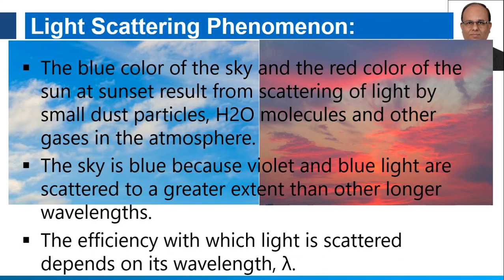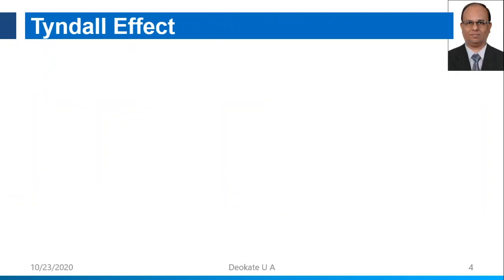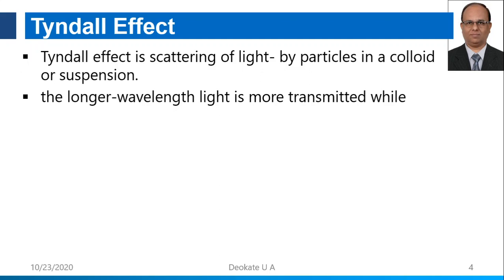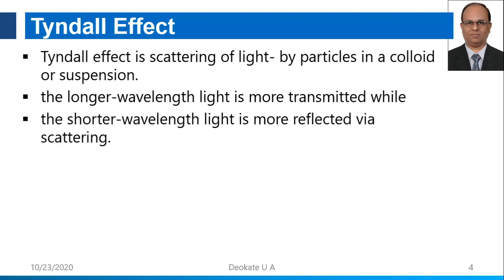The efficiency with which light is scattered depends upon wavelength. A few terminologies you should know: the first is the Tyndall effect. The Tyndall effect is scattering of light by particles in a medium without changing in wavelength. In that, intense light is more transmitted while, when the wavelength is shorter, the light is more reflected via scattering.